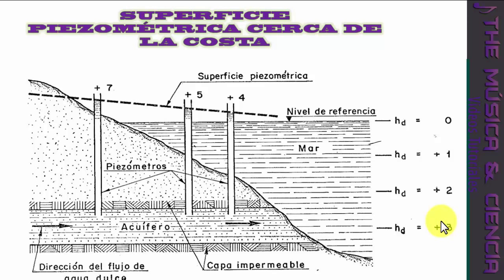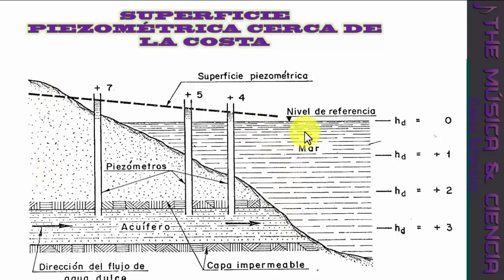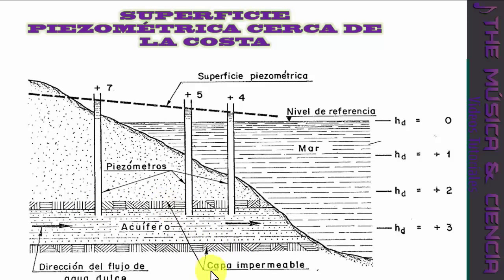El nivel piezométrico en los acuíferos costeros: a medida que el acuífero se va acercando al mar, la cuña de agua dulce por encima del mar va disminuyendo hasta que el valor se hace cero al llegar al nivel del mar. El acuífero profundo considerado aquí es un acuífero confinado, donde tanto la capa superior como la inferior son impermeables, teniendo gran cantidad de agua aprovechable a través de pozos.